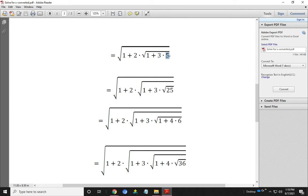Next we write root over 5 means root over 25, that is 1 plus 2 into root over 1 plus 3 dot root over 25. Again we break this 25 as 1 plus 4 into 6.